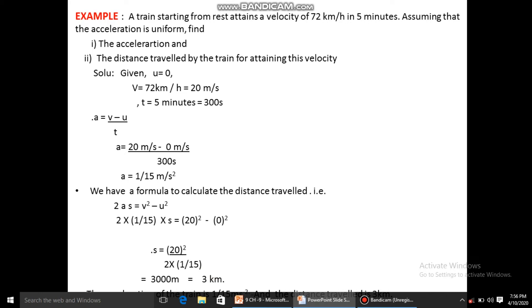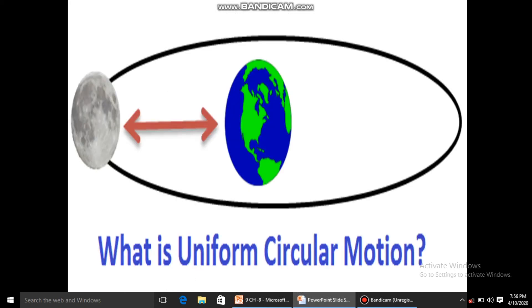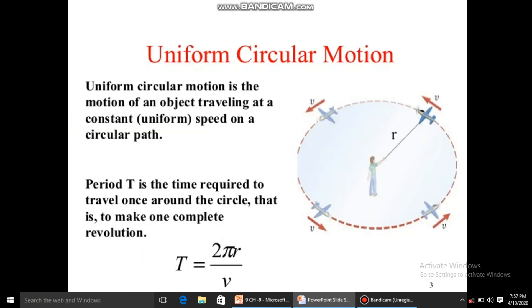Now students, let's talk about uniform circular motion. Circular means in a circular path and uniform means constant. For example, the earth revolves around the sun, that is a uniform motion. In 365 days it completes one revolution. Similarly, the earth rotates on its axis in 24 hours.